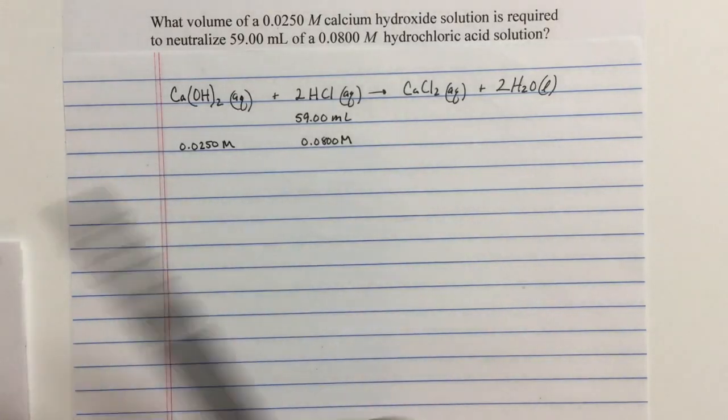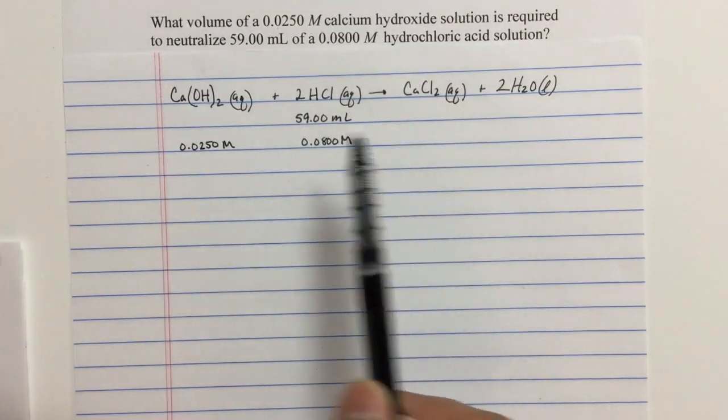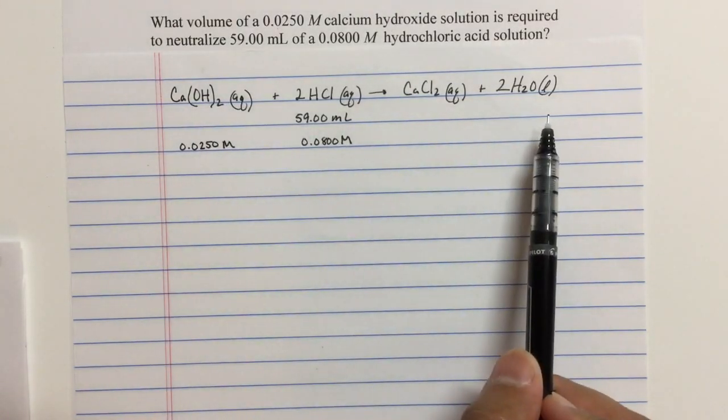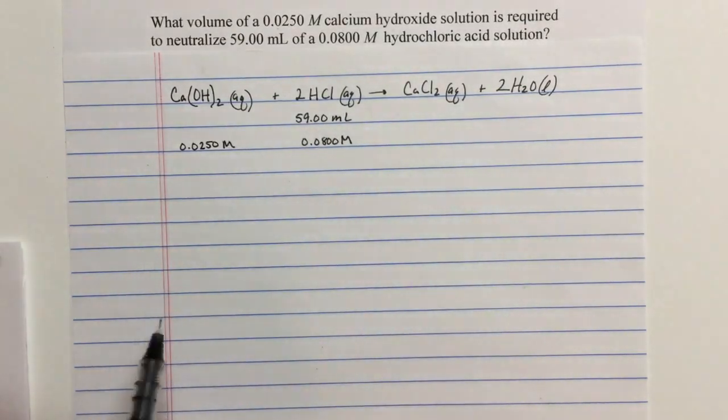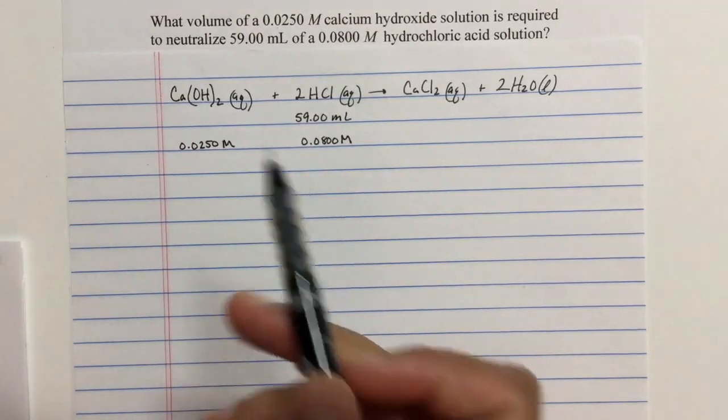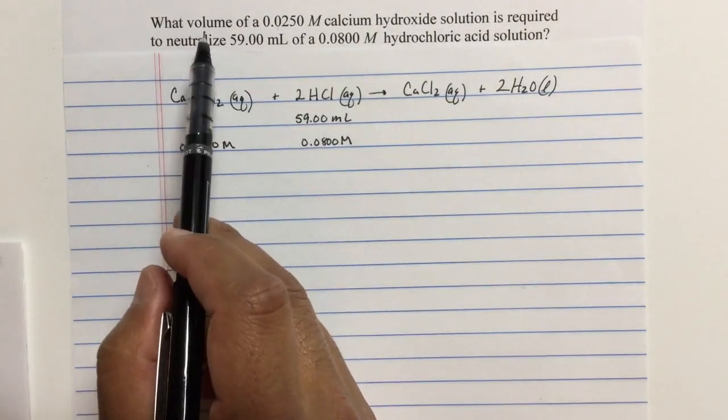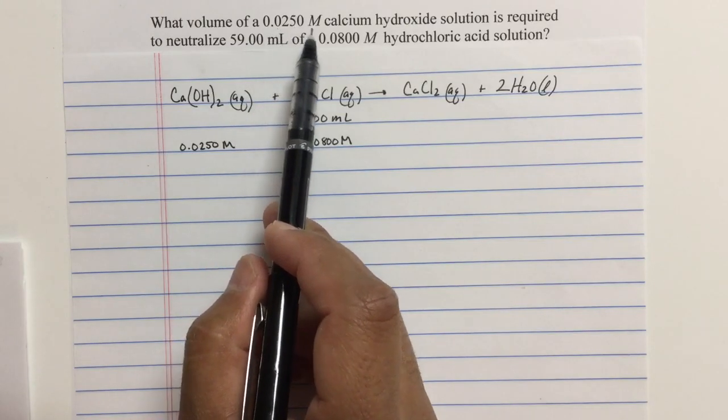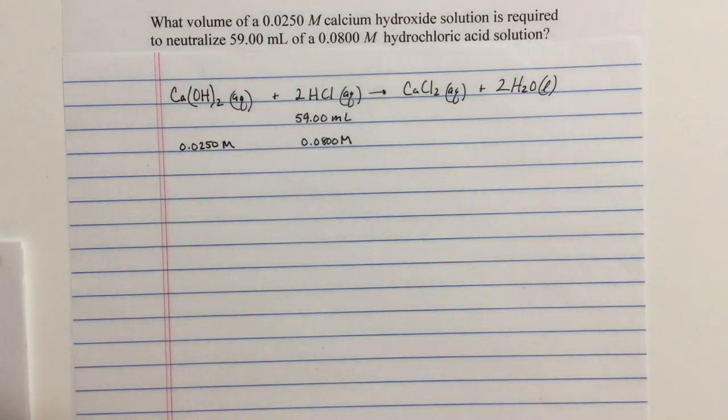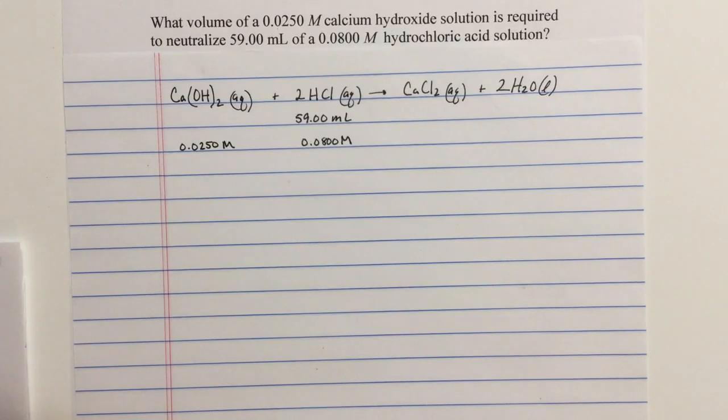Go to your notes and look at these double displacement reactions so you can go ahead and write the equation. Notice the question doesn't give us the equation, but I've already written it down for us. So here's the question: What volume of a 0.0250 molar calcium hydroxide solution is required to neutralize 59 milliliters of a 0.0800 molar hydrochloric acid solution?